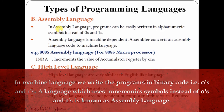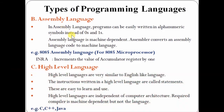In assembly language, we write programs using alphanumeric symbols instead of 0 and 1. For example, in 8085 assembly language for the 8085 microprocessor, INR A is an instruction. This instruction says increment the value of the accumulator register by 1. To convert it into machine language, the system needs an assembler. Assembler converts assembly language code to machine language. Remember, assembly language is machine dependent — this instruction will work only for the 8085 microprocessor, not for other microprocessors.